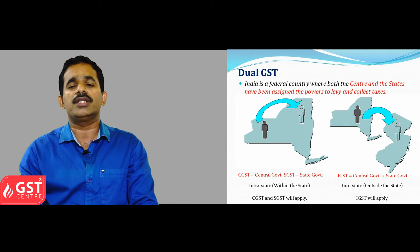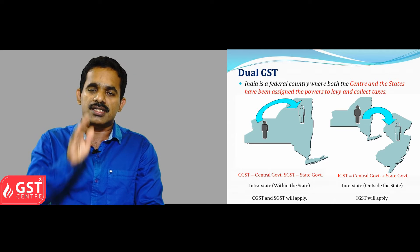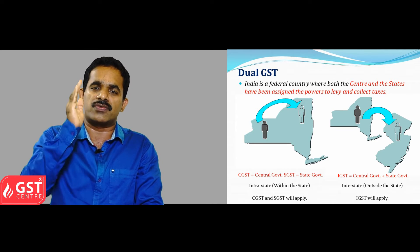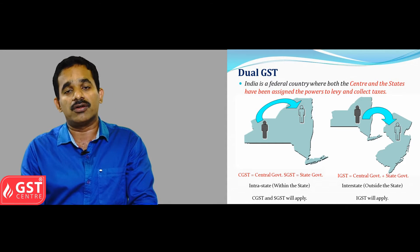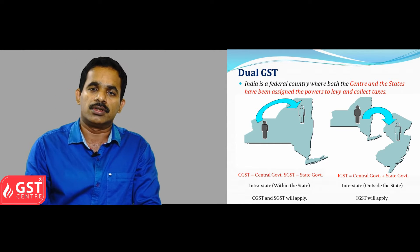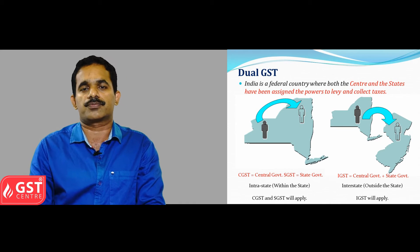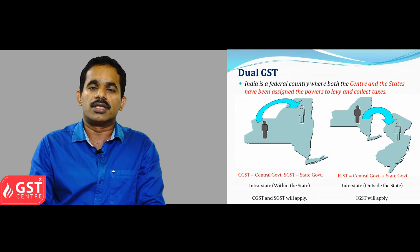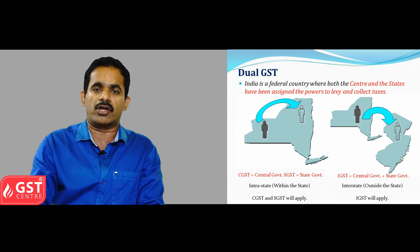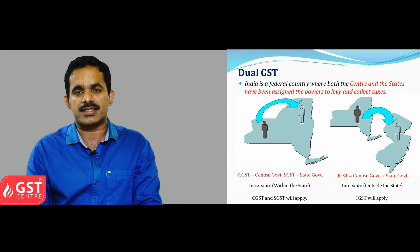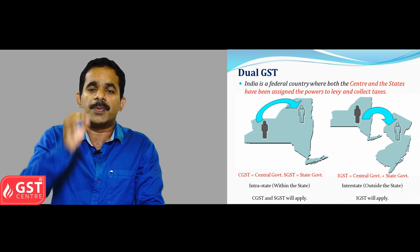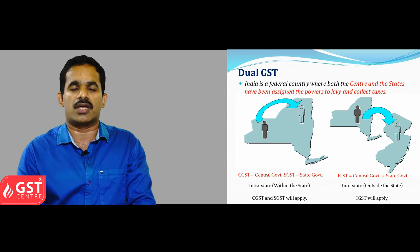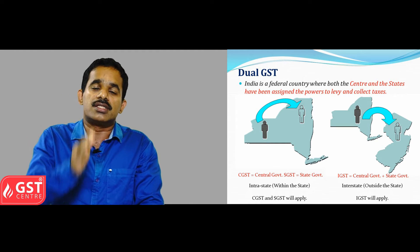In India, a dual GST will be implemented, as India is a federal country. Both state governments as well as the central government will have the authority to collect tax from businesses or consumers. As per the dual GST system, there are three components for Goods and Services Tax — that is, CGST, SGST, and IGST.